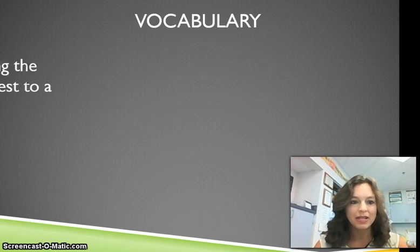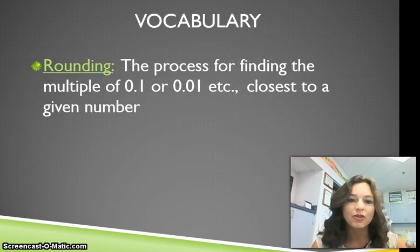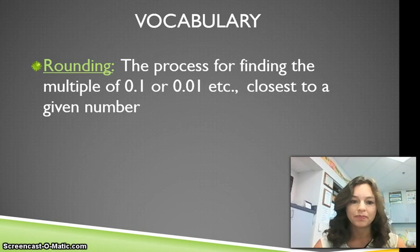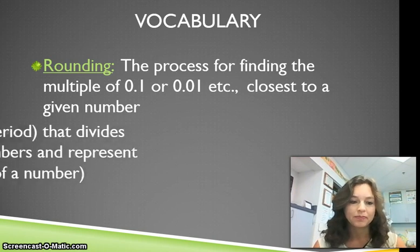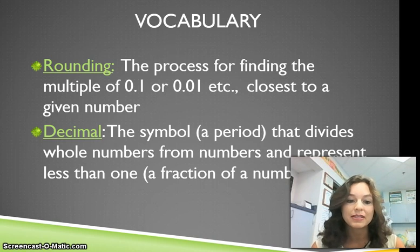For vocabulary today, I want you to know that the word rounding means the process for finding the multiple of one-tenth or one-thousandth, etc., closest to a given number. A decimal is the symbol — a period — that divides whole numbers from numbers and represents less than one, a fraction of a number.